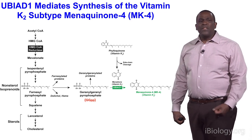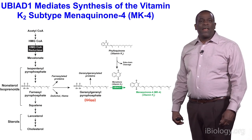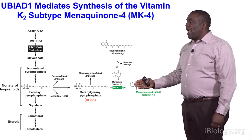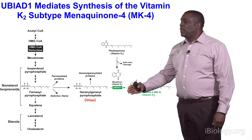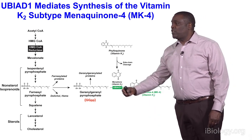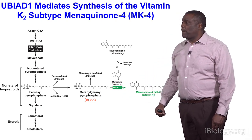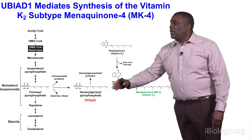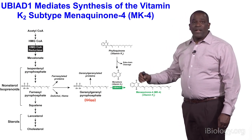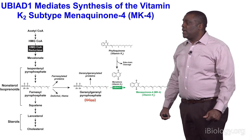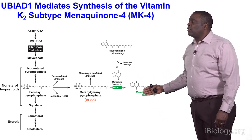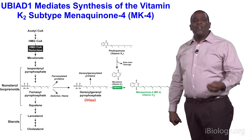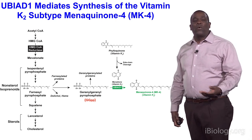Shown here is the cholesterol biosynthetic pathway covered in part one of my talk. UBIAD1 utilizes one of the products of the cholesterol synthetic pathway called geranylgeranyl pyrophosphate, or GGPP for short. UBIAD1 transfers the geranylgeranyl moiety from GGPP to menadione, a form of vitamin K called vitamin K3, to produce menaquinone-4, or vitamin K2. So UBIAD1 uses GGPP as a substrate to synthesize a form of vitamin K2 called menaquinone-4, or MK4.